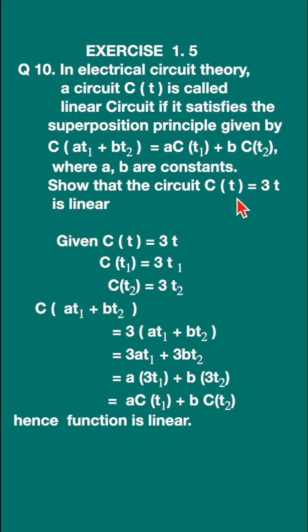So this is the circuit given: C(t) = 3t. We have to prove it is linear. It can be only linear if it satisfies this equation. Let us see if this function satisfies this equation. We have to show that this LHS is equal to RHS.